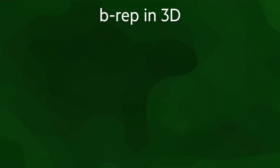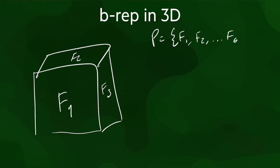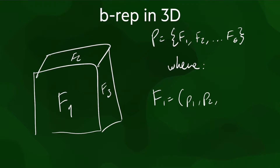Moving on to 3D, instead of representing a polyhedron explicitly, we can represent it implicitly through the 2D surface that bounds it, usually by modeling every polygon in its surface independently. Each of the surfaces is represented through a series of points, implicitly joined by line segments.